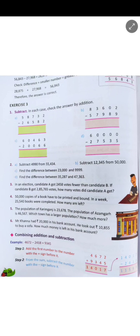Question 2, part of this exercise says: subtract 4,990 from 55,434.